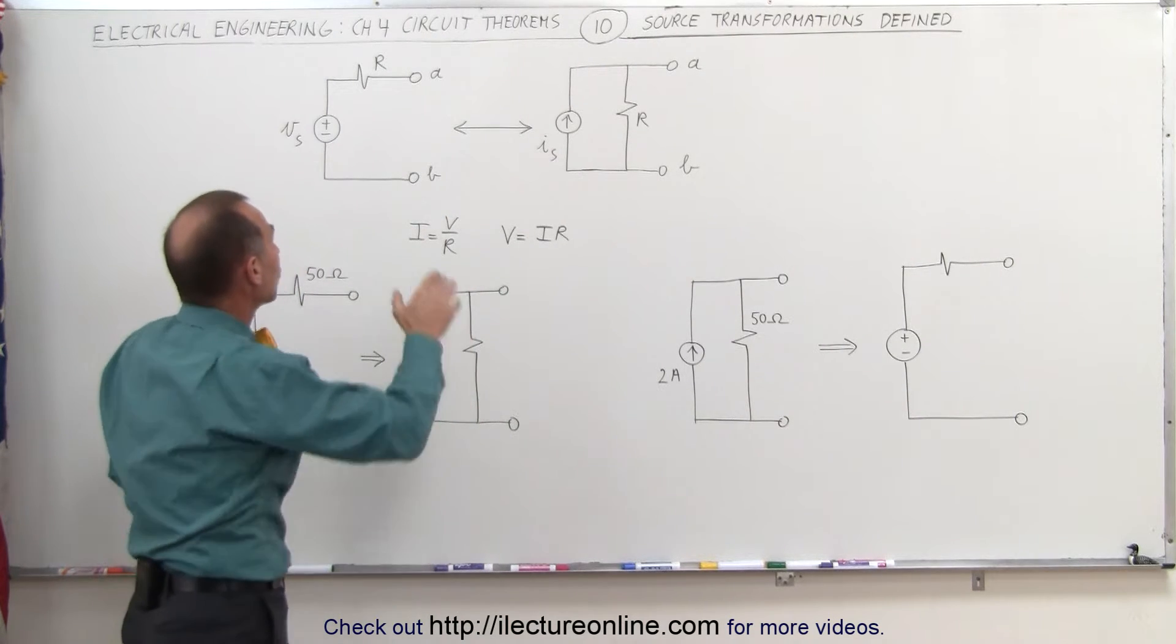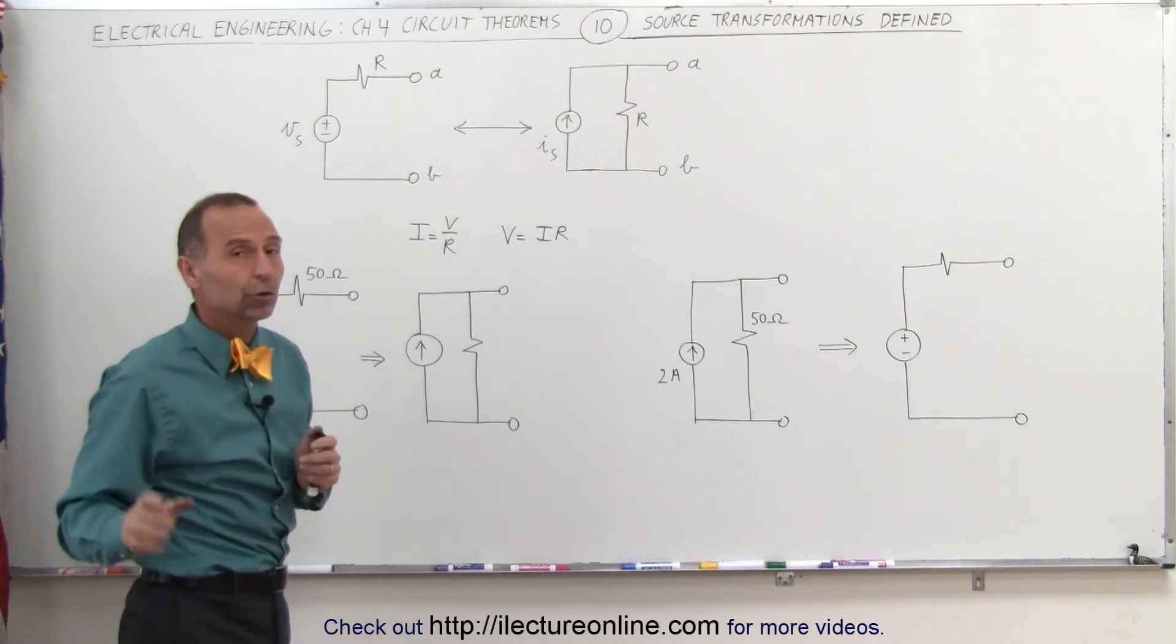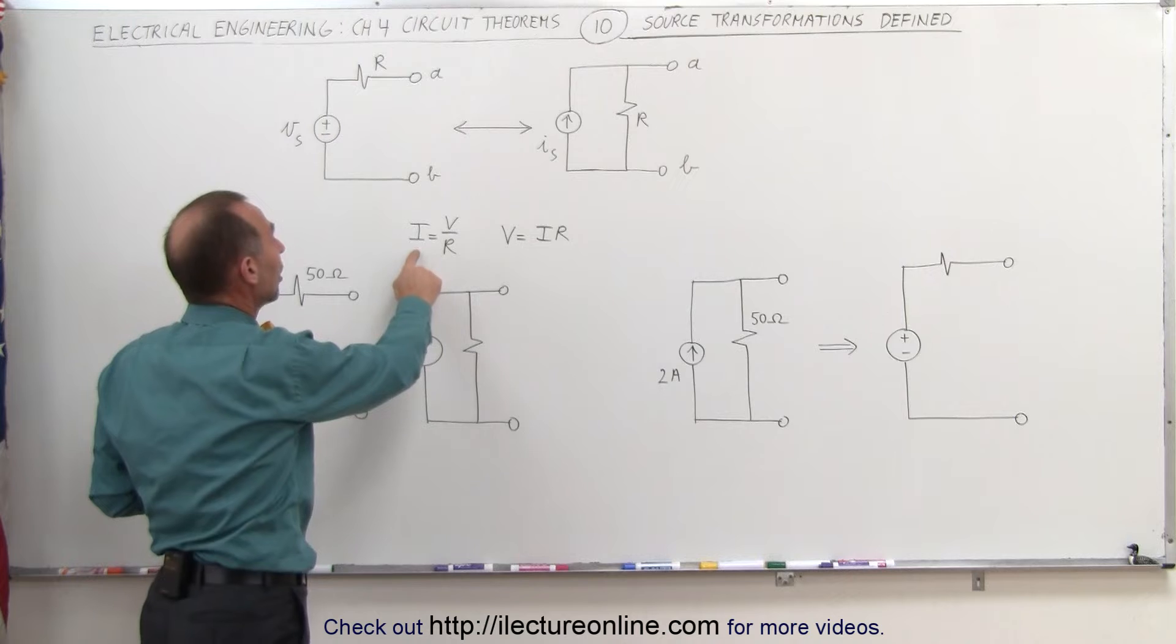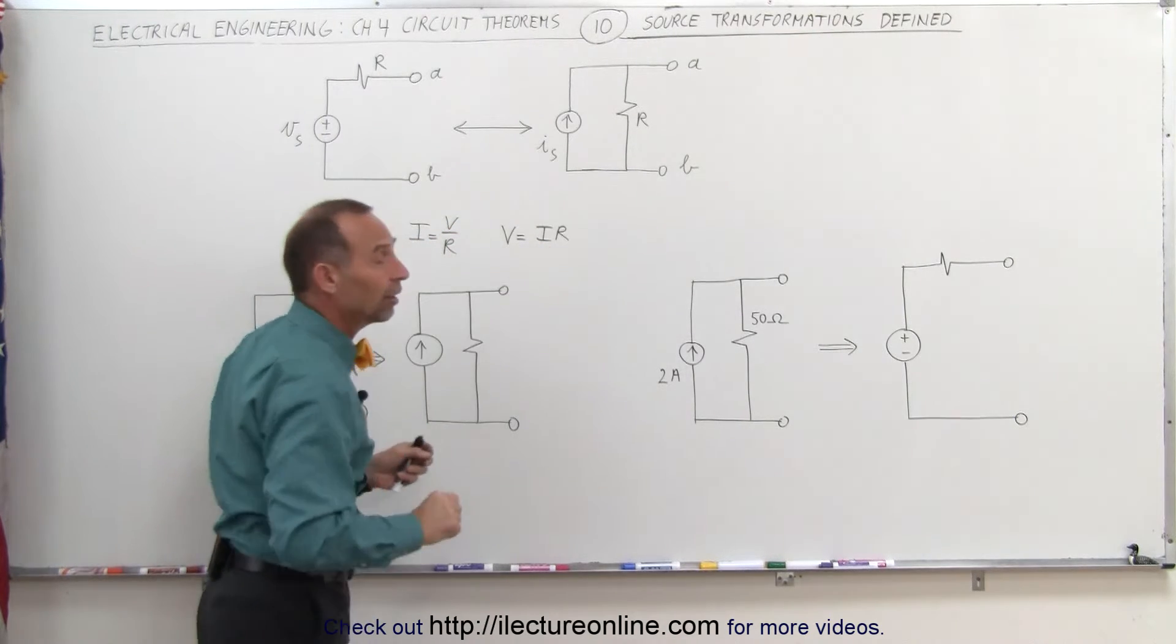But how do we find the transformation of the current from the voltage to the current and from the current to the voltage? For that we use Ohm's law. Realizing that I equals V over R and V is equal to I times R.